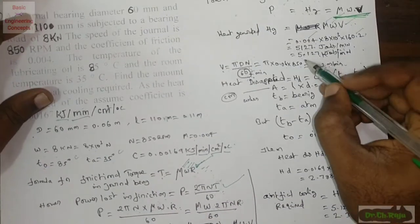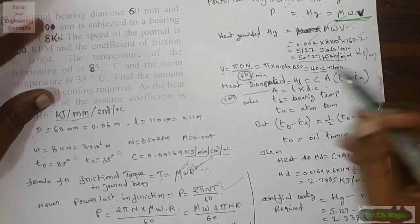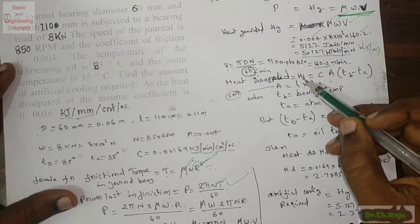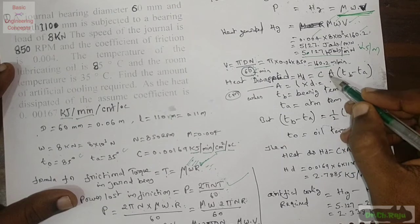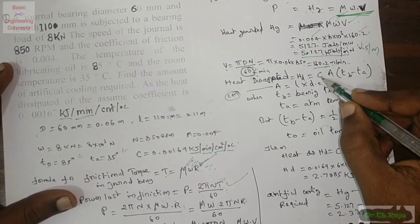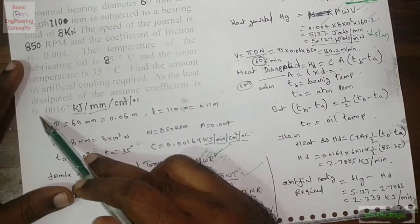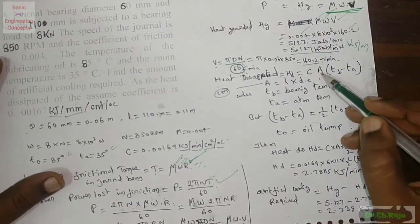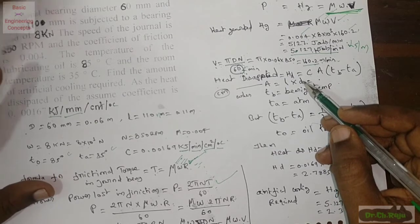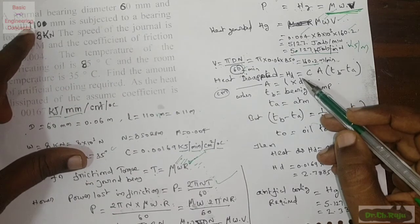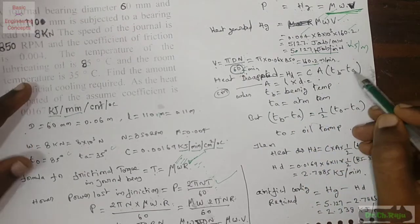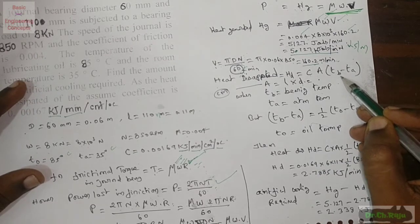Since the heat dispatch coefficient C is given in kilo joules per minute, it is essential to work in kilo joules per minute. The heat dispatched formula is: Hd = C × A × (tb − ta), where C is the specific heat dispatch coefficient, A is the projected area of the bearing, tb is bearing temperature, and ta is atmospheric temperature.